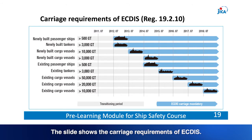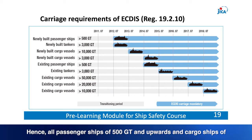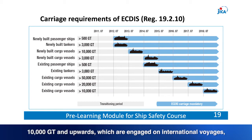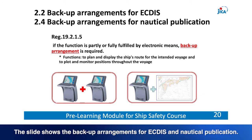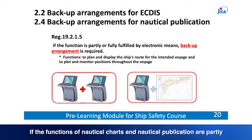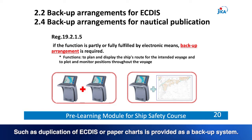The slide shows the carriage requirements of ECDIS. It was introduced on 1st July 2012 with a transitional period of six years. Hence, all passenger ships of 500 gross tonnage and upwards and cargo ships of 10,000 gross tonnage and upwards engaged on international voyages shall be provided with ECDIS. If the functions of nautical charts and publication are partly or fully fulfilled by electronic means, a backup arrangement is required — such as duplication of ECDIS or paper charts.